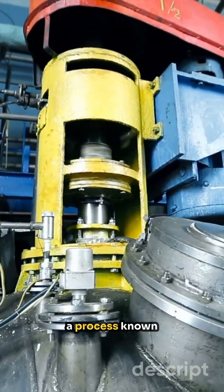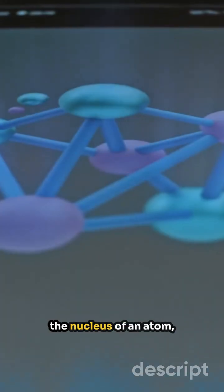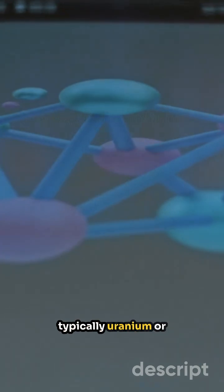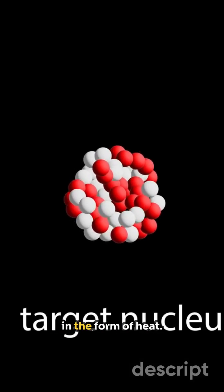Nuclear energy is generated through a process known as nuclear fission. This involves splitting the nucleus of an atom, typically uranium or plutonium, which releases a considerable amount of energy in the form of heat.